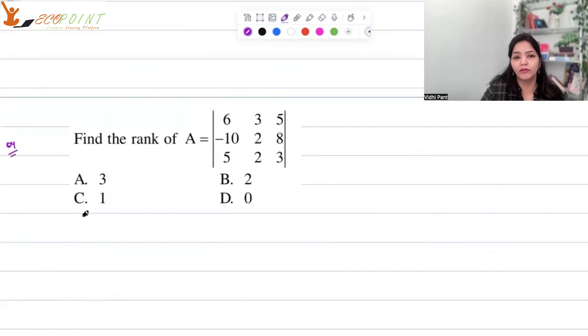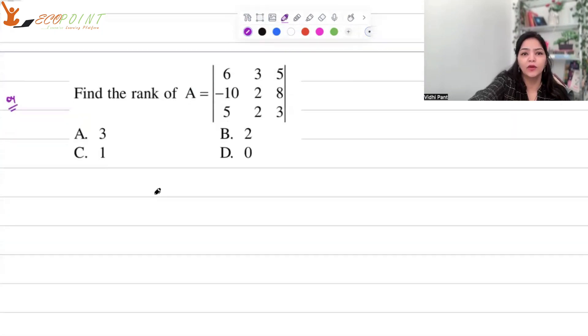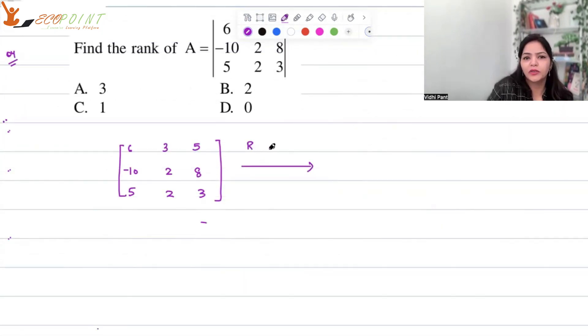Question number 4, we have to find the rank of this matrix that you can see here. So rank of A where A is - the first operation I'm going to do is make a 1 here by making fractions. R1 goes to 1 by 6 of R1. So this becomes 1, half, 5 by 6, and you have minus 10, 2, 8, 5, 2, 3.